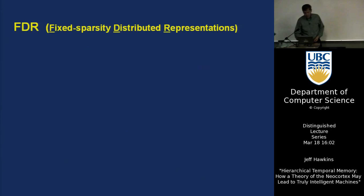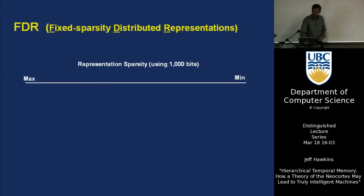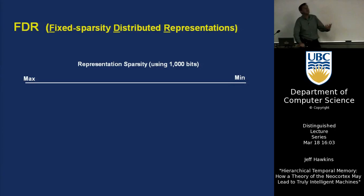We're going to introduce a concept we call FDR — Fixed Sparsity Distributed Representation. You might think of this as just how do I represent something. If I want to represent something and I'm going to use a thousand bits — you can think of it as a thousand cells, some on and some off.